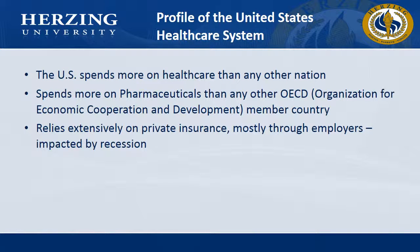Profile of the United States health care system: The United States spends more on health care than any other nation. They spend more on pharmaceuticals than any other OECD — Organization for Economic Cooperation and Development — member country. They rely extensively on private insurance, mostly through employers, impacted by recession. In other developed countries, such as Germany or Canada, there are nationwide government health insurance programs. In underdeveloped and developing countries, health insurance is not always an option and is considered a premium.